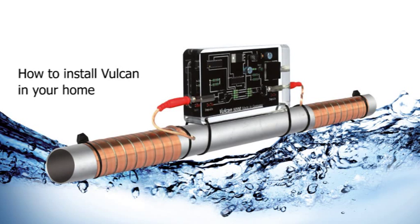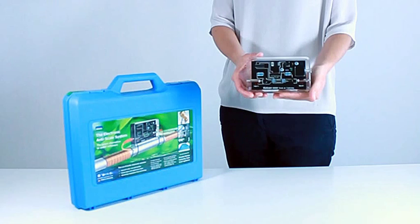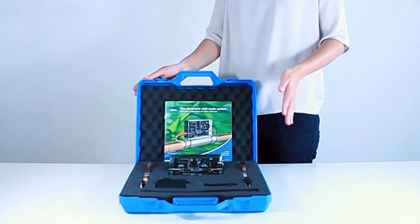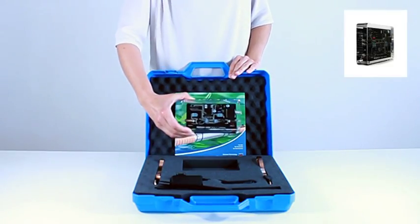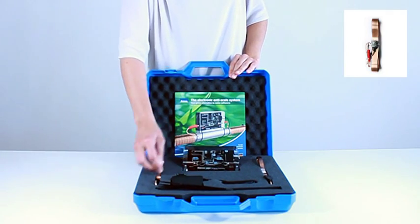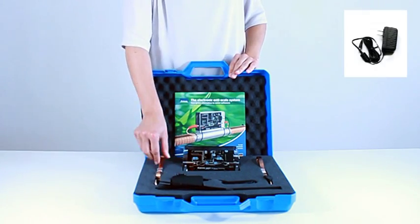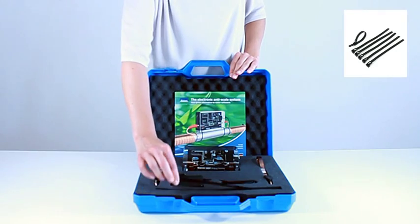Today you will learn how to install Vulcan in your home. The Vulcan home unit comes in a complete box. It includes the main electronic block, which is cast in acrylic, the Vulcan impulse bands made of copper, one electronic switching adapter and several cable clips.